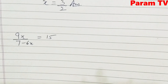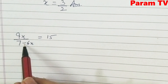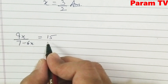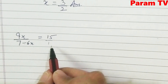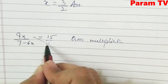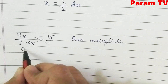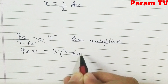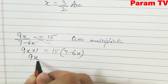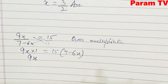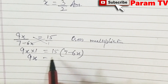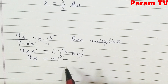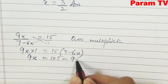Question number 2: 9x / (7 − 6x) = 15. Again, 15 has no denominator, so it means 15/1. Cross multiply: 9x × 1 = 15 × (7 − 6x). So 9x = 105 − 90x.